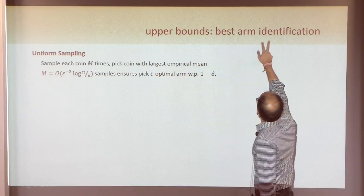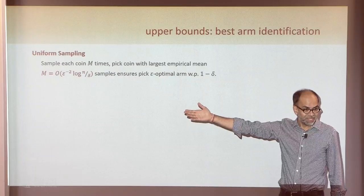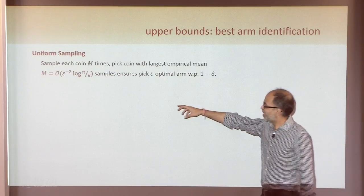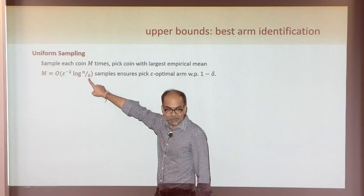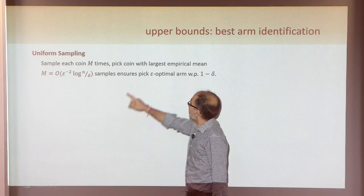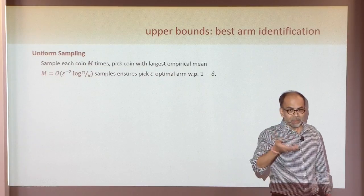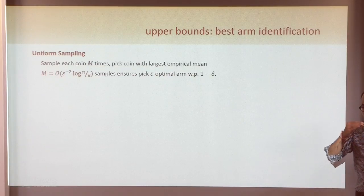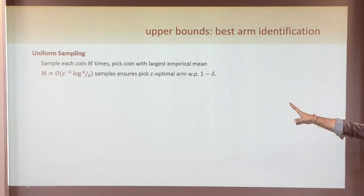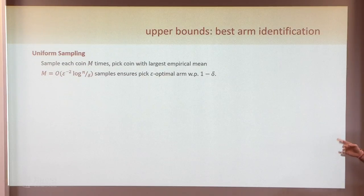For uniform sampling, to find the best arm, I can just sample every arm a lot, use the Chernoff bounds and union bound. If I take enough samples, I'll be very close to the mean and I'll find an epsilon-approximate arm — an arm which is within epsilon of the maximum with high probability. All of you know how to do this.